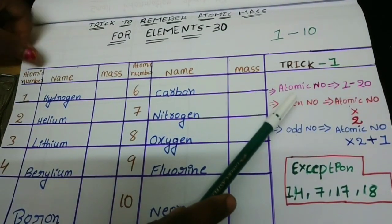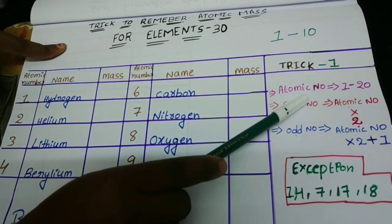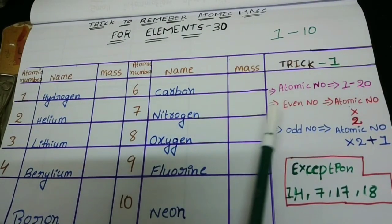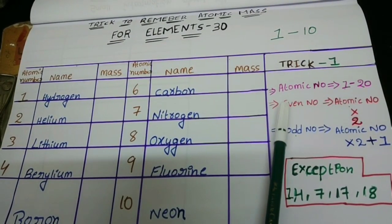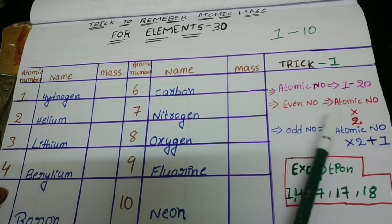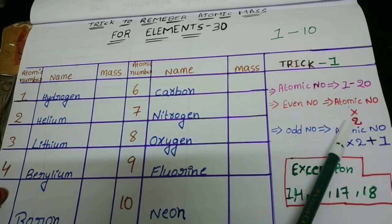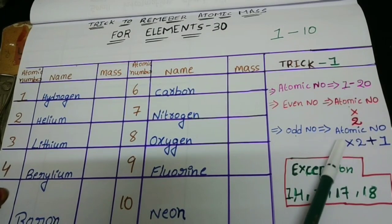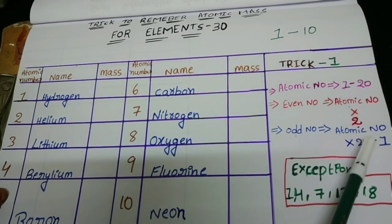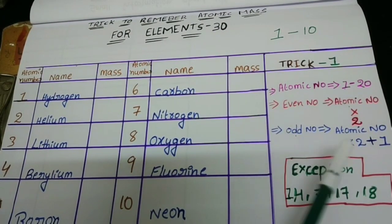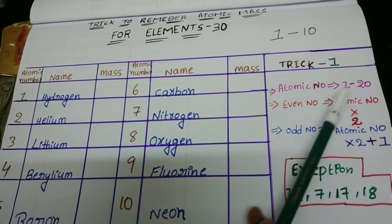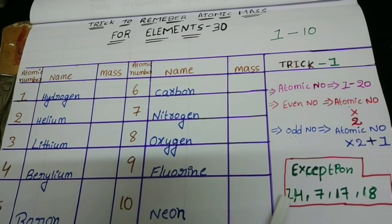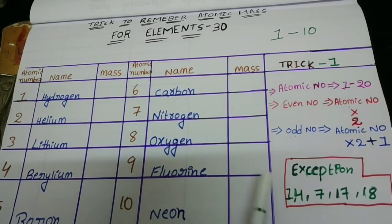Using the first trick, we will write the atomic masses for elements 1 to 20. The rule is: if the atomic number is an even number, multiply the atomic number by 2. If the atomic number is an odd number, multiply the atomic number by 2 and then add 1. For elements 1 to 20, the exceptions are atomic numbers 1, 4, 7, 17, and 18.